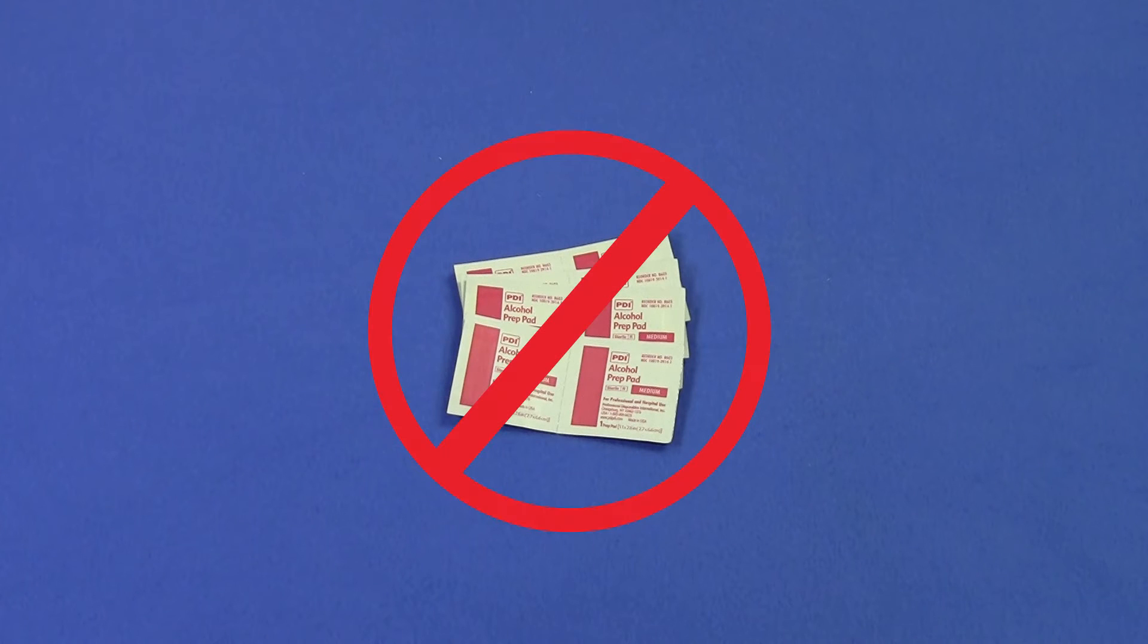Note that unlike many other measures, we will not be using alcohol prep pads to clean the electrode sites. Alcohol dries the skin and with EDA we are measuring moisture levels. Cleaning with alcohol prep pads will diminish or remove EDA response.